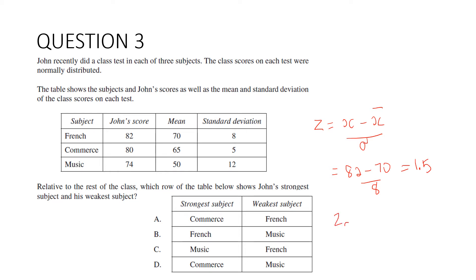We're going to need to do that for the other two subjects as well. Commerce is going to be (80 - 65) / 5. 80 take away 65 is 15, divided by 5 is 3. So he's done extremely well in commerce. He's 3 standard deviations above the mean. And then finally for music, it is (74 - 50) / 12. 74 take 50 is 24 divided by 12 is 2.